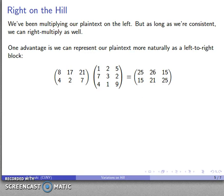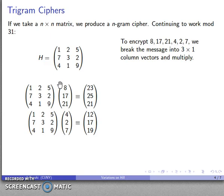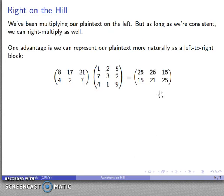Notice that this is different from what we got the last time. Remember, previously, that first set of symbols, 8, 17, 21, became 23, 25, 21. This time, instead of 23, 25, 21, we get 25, 26, 15. So we get a different ciphertext, and it's still a hill cipher, it's just a different hill cipher.